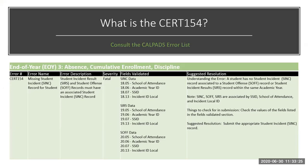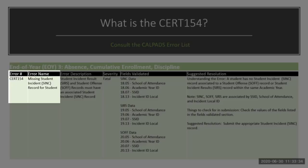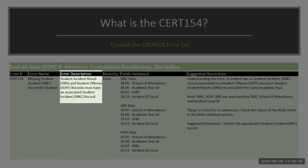So what is the CERT 154? The first thing you always want to do is consult the CalPADS Error List. Here is a screenshot of the CalPADS Error List. On the left, you see the error name and the error number. These are fields used for reference so that you can identify the error from your certification details and know where to find the resolution in the CalPADS Error List. Now, the problem is described in the error description.